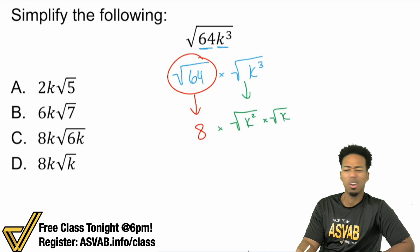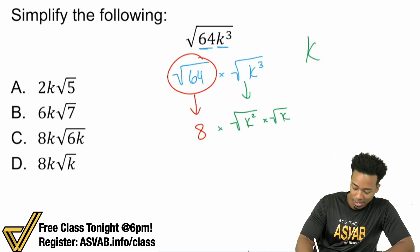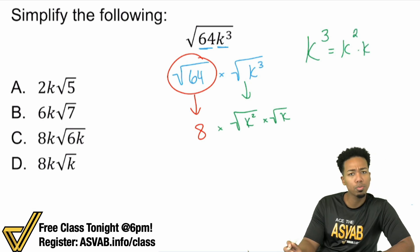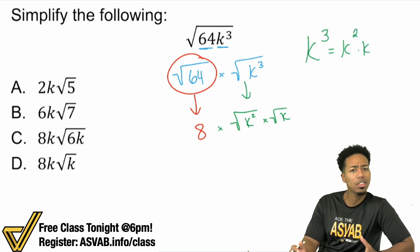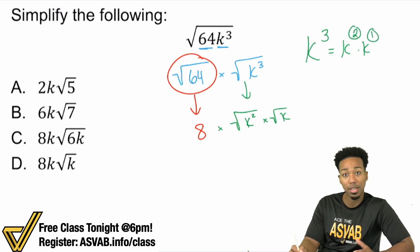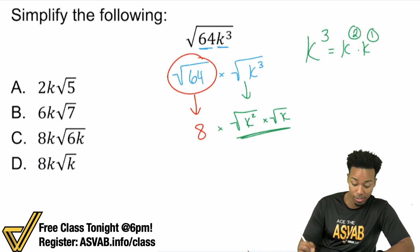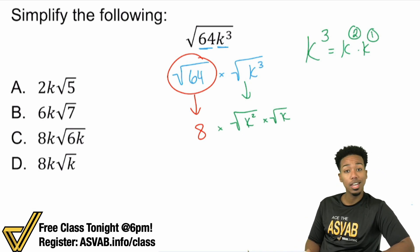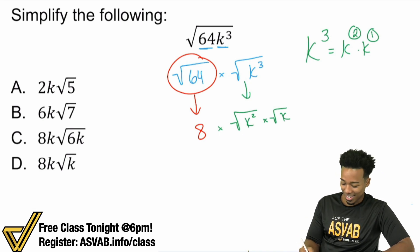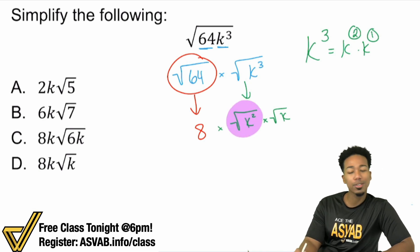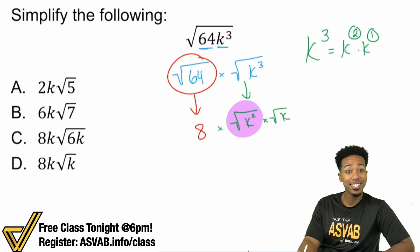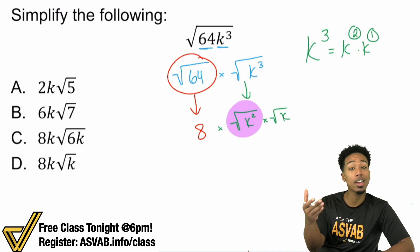How does that make any sense at all? Well, think of it like this. k³, isn't it the same thing as k² times k? Because when you multiply two of the same variables, you add their exponents. So two plus that imaginary one that's there, that goes back to three. So I'm perfectly allowed to say that.